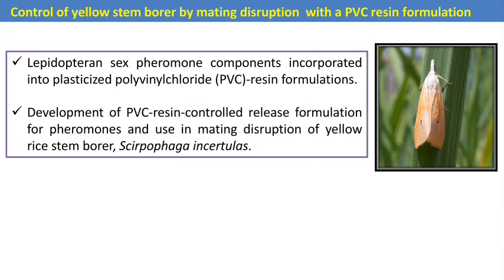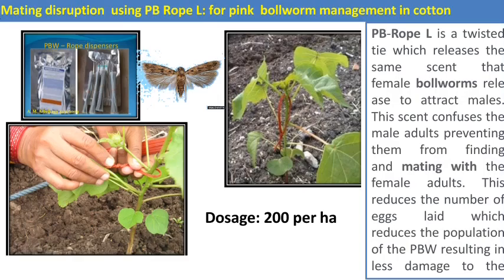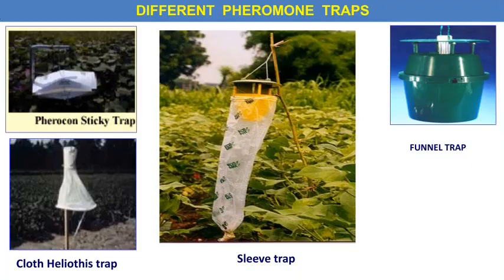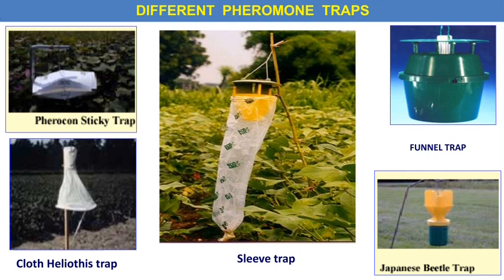Special lures available in the market include PVC resin formulations — plasticized polyvinyl chloride resin — which can be used in rice crops against the yellow stem borer. Another technique is the PB rope-L, a twisted tie that releases the same scent that the female pink bollworm releases to attract males. These scents confuse male adults, preventing them from finding and mating with females, reducing the egg count and population of pink bollworm, resulting in less damage to cotton. The recommended dose is 200 ropes per hectare.